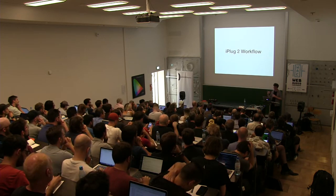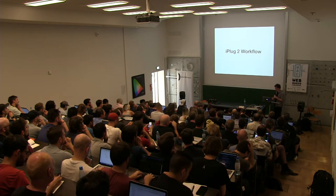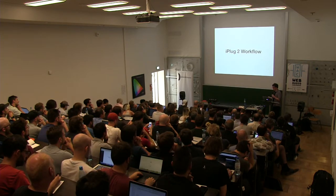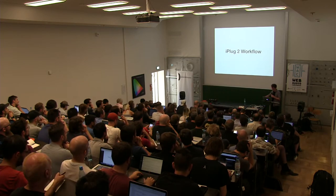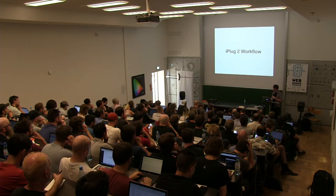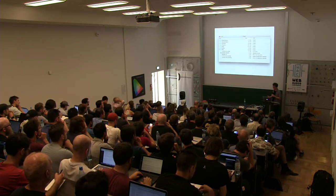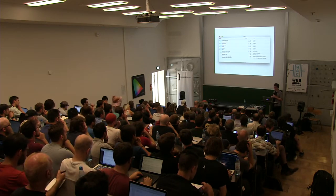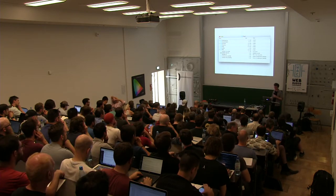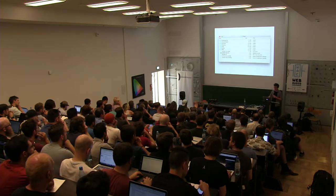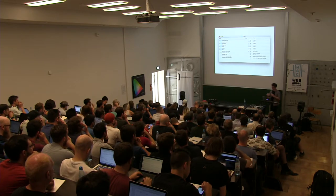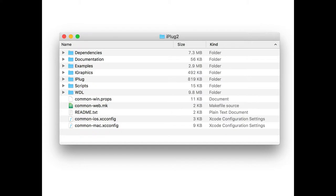I'd like to talk a bit about the workflow in iPlug2, which I think is probably the main thing that I've added to iPlug, because this comes from my fork of iPlug originally. I kind of see iPlug as almost like a creative coding framework, like OpenFrameworks or that kind of thing. It's very quick to create a project, and the project is quite strictly set up so that you don't have to think too much about all the boring stuff like compiler settings. You can focus in on your DSP and your user interface and user experience.